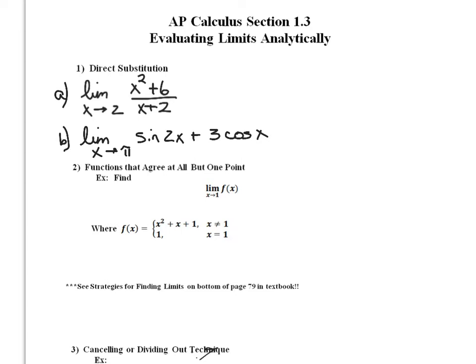The limit as x approaches 2 of x squared plus x over x plus 2. Now I can just go ahead and do direct substitution on this. So substituting the 2 in for x, that's giving me 2 squared plus 2 times 2 over 2 plus 2.